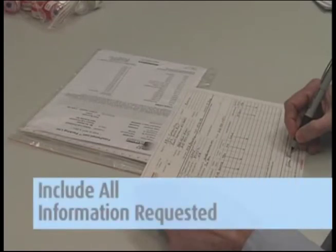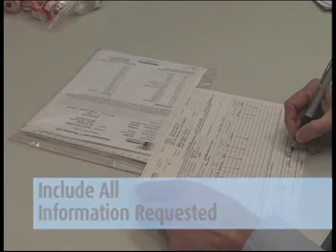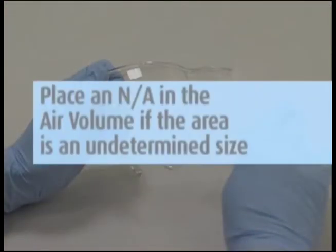Complete the chain of custody form. It is important that you include all the information requested in order to ensure the proper handling and turnaround time of your samples. Place an N.A. in the air volume if the area is an undetermined size and we will report totals. Otherwise, add the area in square centimeters.